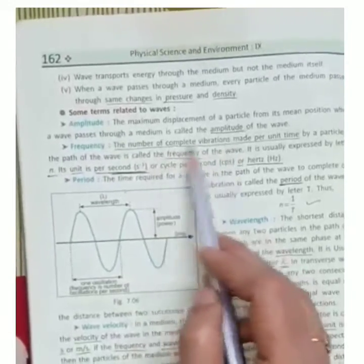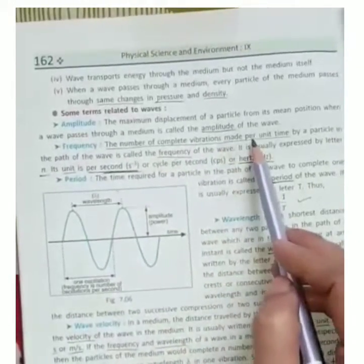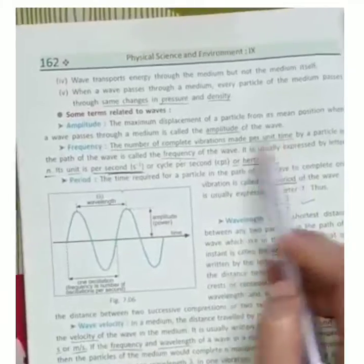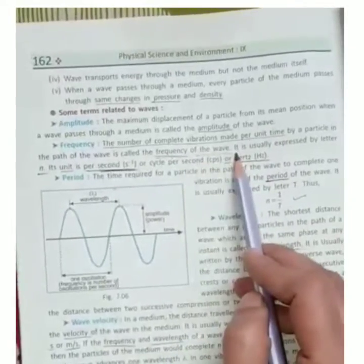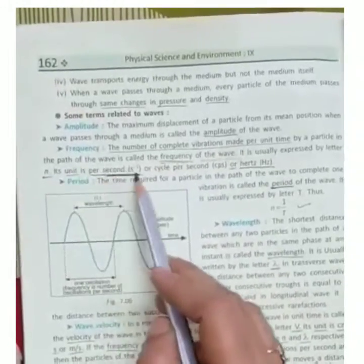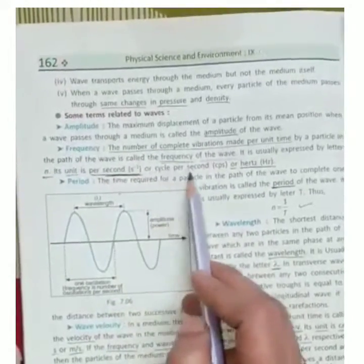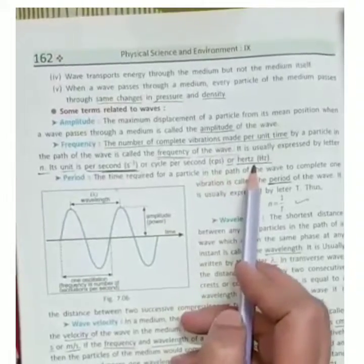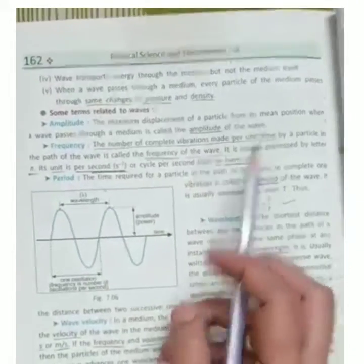Next is frequency. Number of complete vibrations per unit time, we will call frequency of the wave. Usually we represent it by n, and its unit is per second, or cycle per second, or hertz.